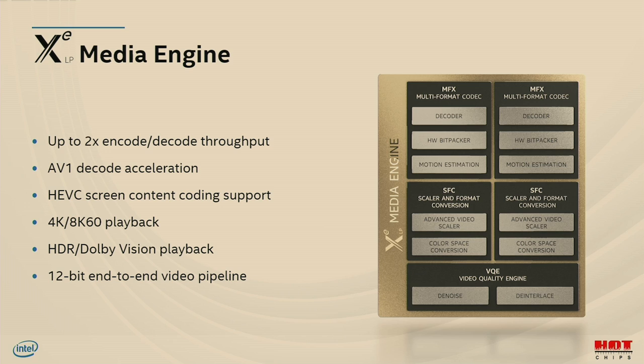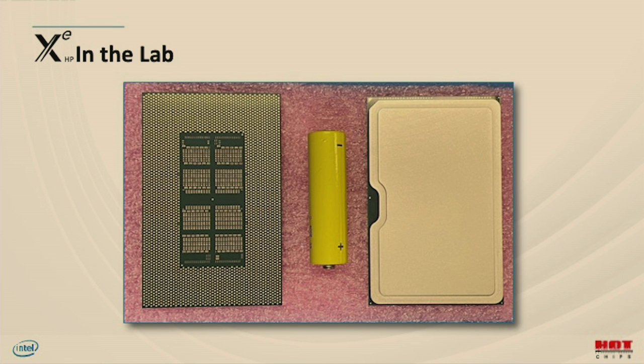XELP supports end-to-end color compression across 3D, media, and display to avoid decompressing data as it moves between blocks. The XELP media engine retains a similar architecture to Gen 11 but increases encode and decode throughputs by close to 2x across multiple formats. It adds AV1 decoder support and HEVC screen content coding support, and continues to drive 4K and 8K 60 fps support with additional HDR display support for HDR10 and Dolby Vision. XELP is ramping production in several products, but it's not the only XE microarchitecture we have in hand.